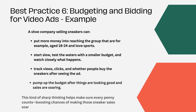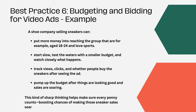Let us look at an example of a shoe company that wants to sell sneakers. They segregate their audiences and identify the target group they want to go for. They start with a small budget to see whether the ad campaign works for their target groups. They closely track the ad performance and based on the response, they increase the budget for the ad campaign. This strategy not only cuts costs for the brand, but also provides strategic information to bid more smartly once the ad campaign is performing better.